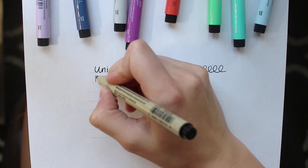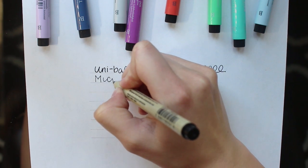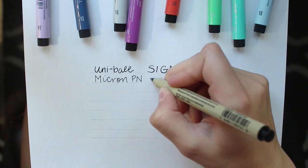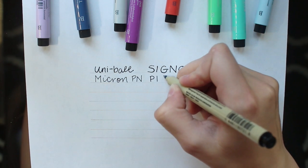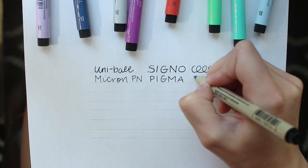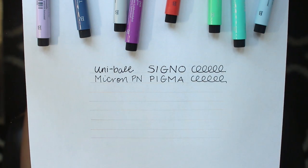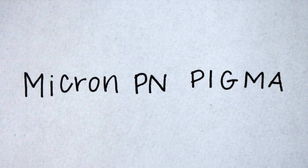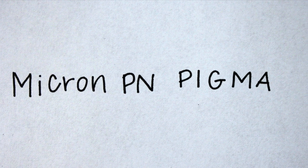Next we have the Micron PN Pigma Pen by Sakura. The ink used to make Pigma pens is supposed to be very resistant to oils and chemical degradation, which is why it's called archival ink. It's very smooth going on and it really sits on top of the paper as opposed to sinking in, which is what can cause the bleeding effect that a lot of pens have when you're using thinner paper like the paper in journals.